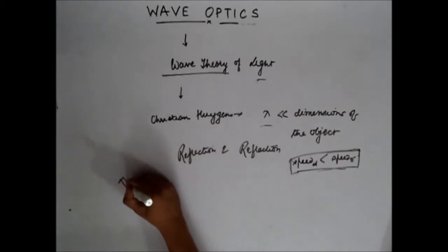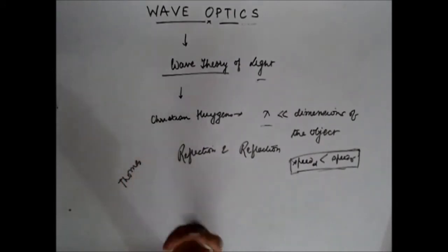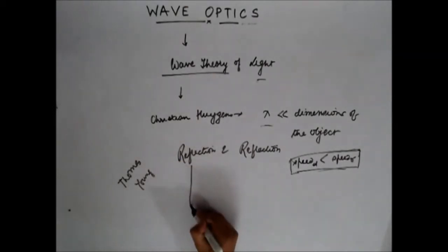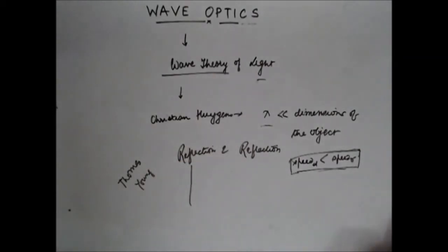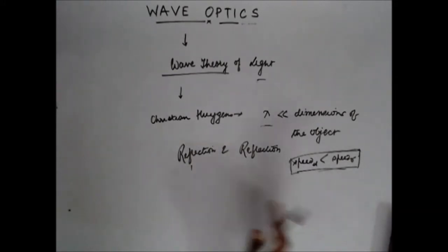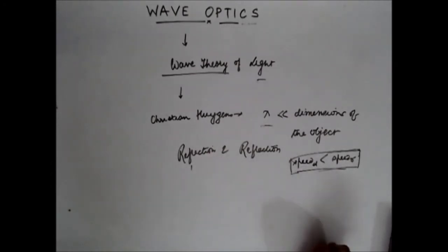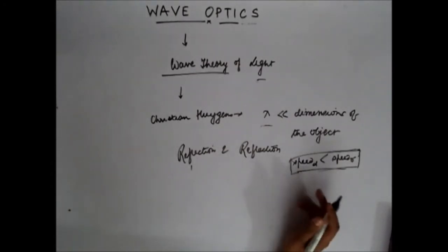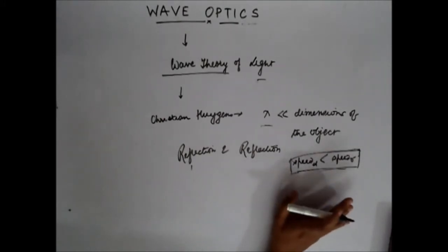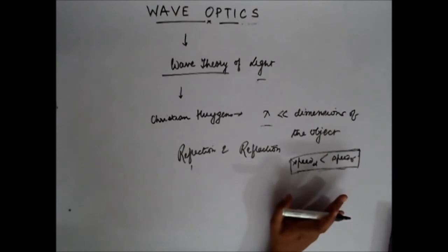Some years later, Thomas Young performed the Young's double slit experiment and he observed some repeated alternate patterns of dark and bright fringes. That phenomenon couldn't be explained by the particle theory of light, so this was the time when the wave theory of light came into existence. After that, a lot of experiments were performed on diffraction and polarization, and finally it was accepted that light has wave properties.